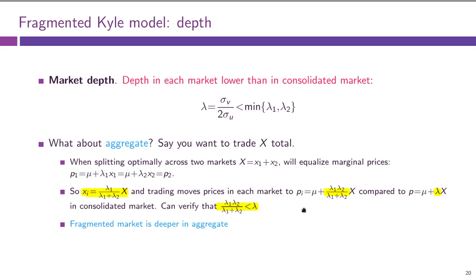The resulting marginal price in the fragmented market will be lower than the marginal price in the consolidated market. So the fragmented market will be deeper in aggregate terms. This analysis is a little cheeky in that some traders can operate across markets while others cannot, and there is a subtlety there. But that is it for depth.